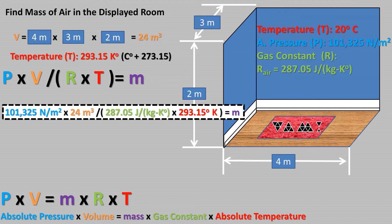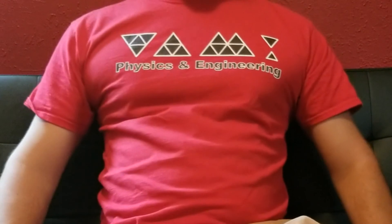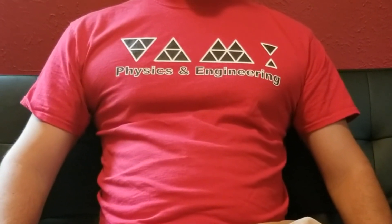Now we have all of our values and we can plug our values into the displayed equation. Pressing enter on our calculator, we get a mass of 28.9 kilograms of air. That concludes this video.